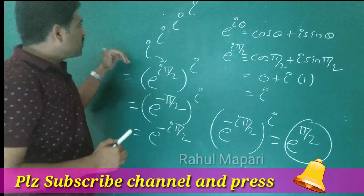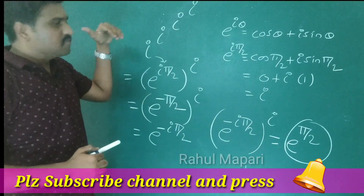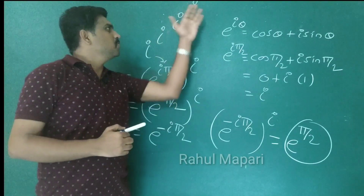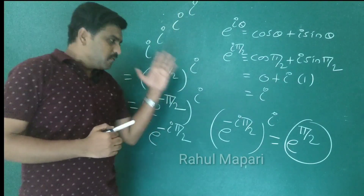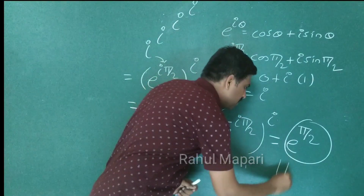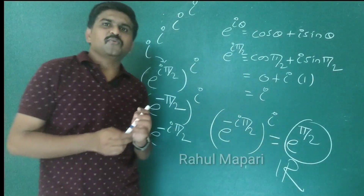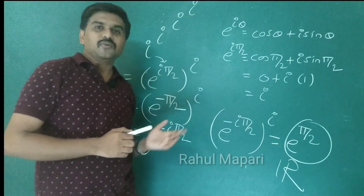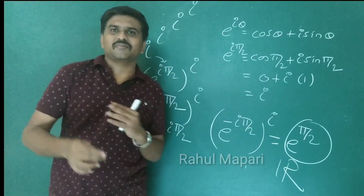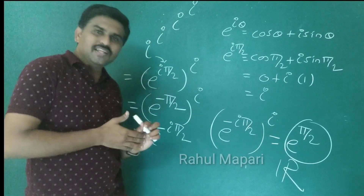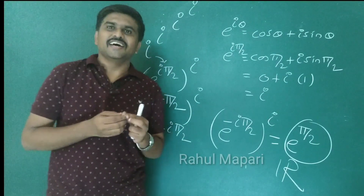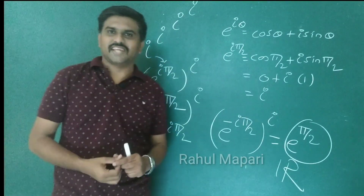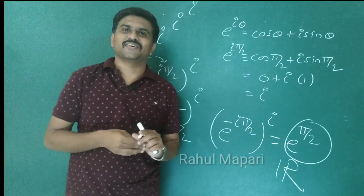It means: if we take complex to the power complex to the power complex to the power complex, we will get a real number. This is very interesting — we can calculate complex numbers easily and get extraordinary results. Thank you very much, thank you for watching this video.